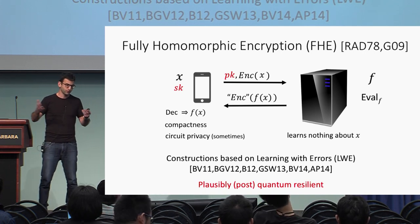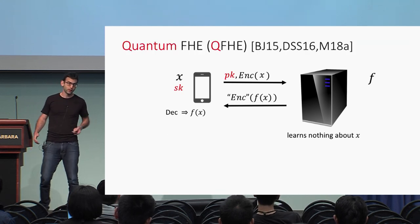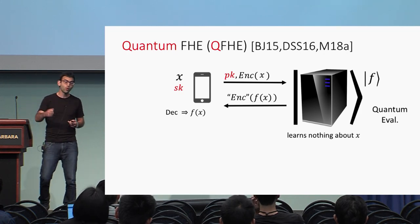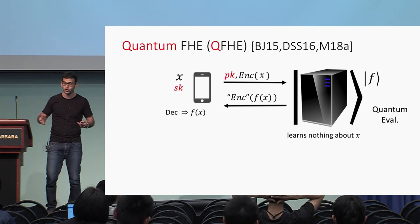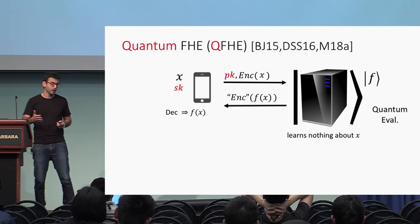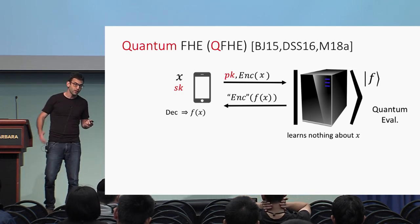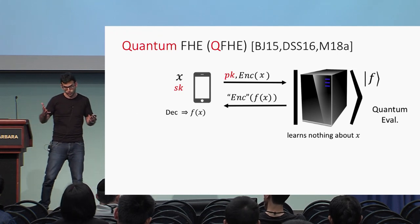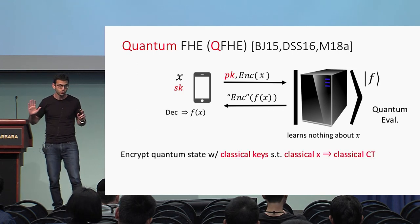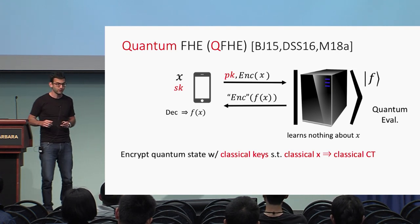Post-quantum means that the actual users of the scheme are classical but the adversary might be quantum. Quantum fully homomorphic encryption was presented by Broadbent and Jeffrey, where you want to outsource a quantum computation — the server has quantum powers and you want it to quantumly evaluate a function on encrypted ciphertext. We want to allow the client to be either classical or quantum. For that purpose we need the key generation and keys to be classical, and when we encrypt a classical message we get a classical ciphertext, but if the client is quantum and wants to encrypt a quantum message, it should be able to do that as well.